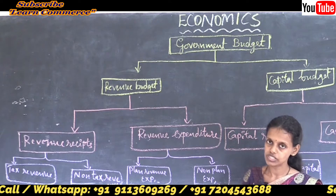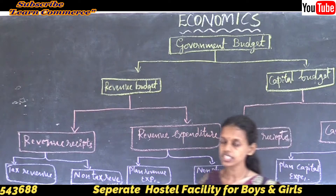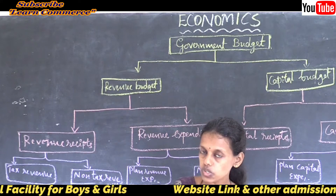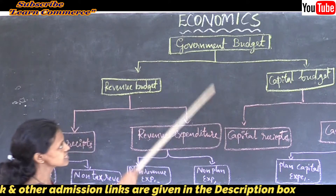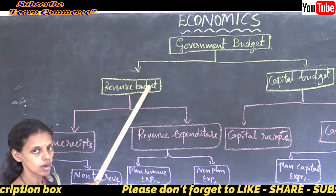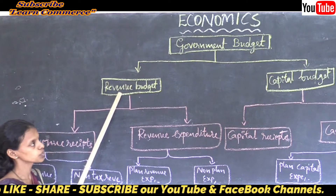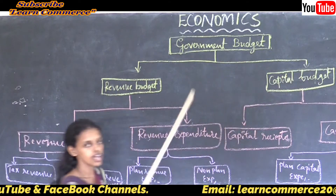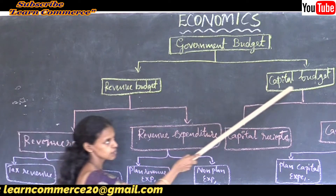What are the types of budget? There are two types of budget. One is revenue budget and the other one is capital budget. It is also called as revenue account and capital account. So government budget mainly consists of these two types: revenue budget and capital budget.